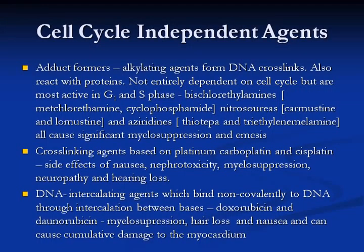Cell cycle-independent agents — the alkylating agents — form DNA crosslinks and also react with proteins. They are most active in G1 and S phase. These include the bis-chloroethylamines such as mechlorethamine and cyclophosphamide, the nitrosoureas, and the aziridines.